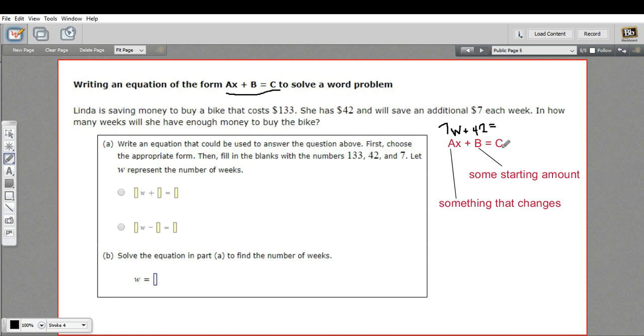And then what goes here, in this case, is going to be the total amount of money she needs to buy the bike. So we'll put $133 in there. So whatever she saves, whatever number of weeks she saves $7 plus the $42 has to add up to the total cost of the bike.